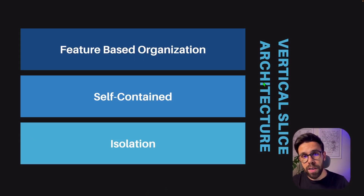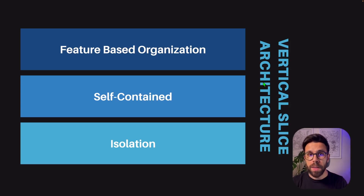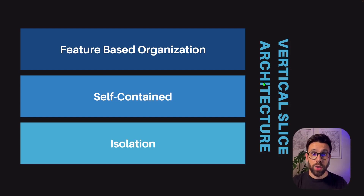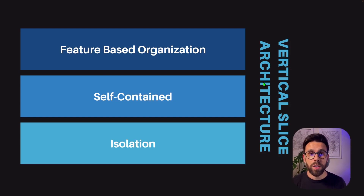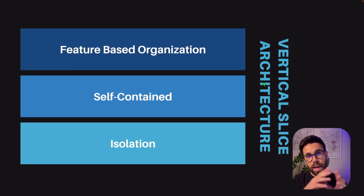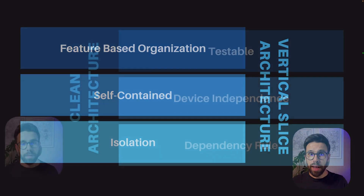Let's start with Vertical Slice Architecture. This architecture mainly focuses on having a feature-driven organization, also known as a slice. Each of those slices will be isolated from the others, but also self-contained. Inside of that slice should live most of the code you need to achieve the goal of that feature — for example, database access code or HTML. So your slice will be self-contained.